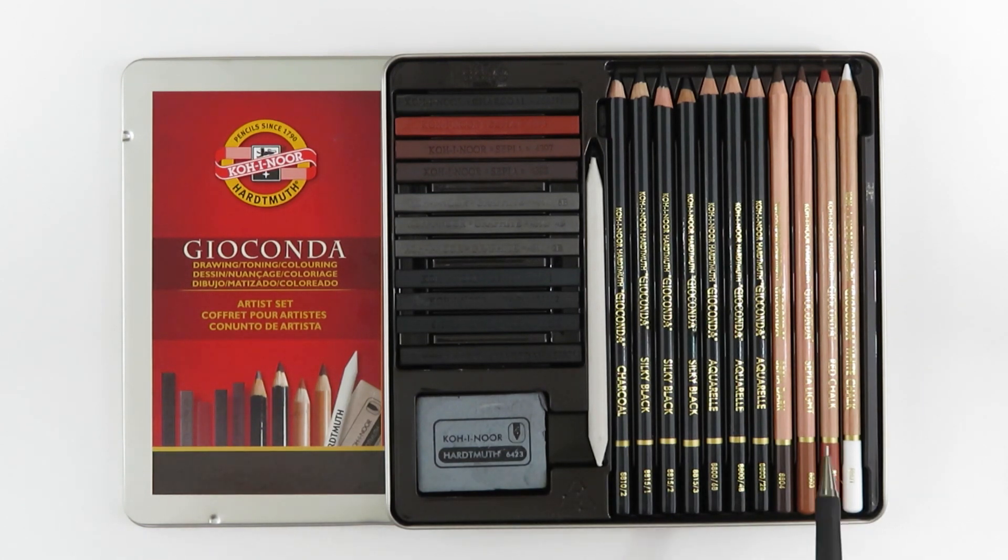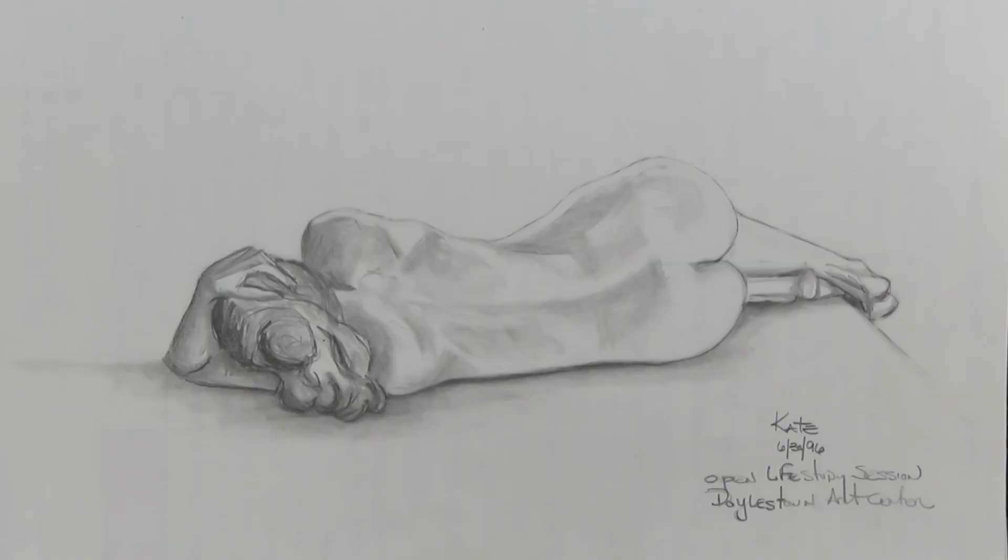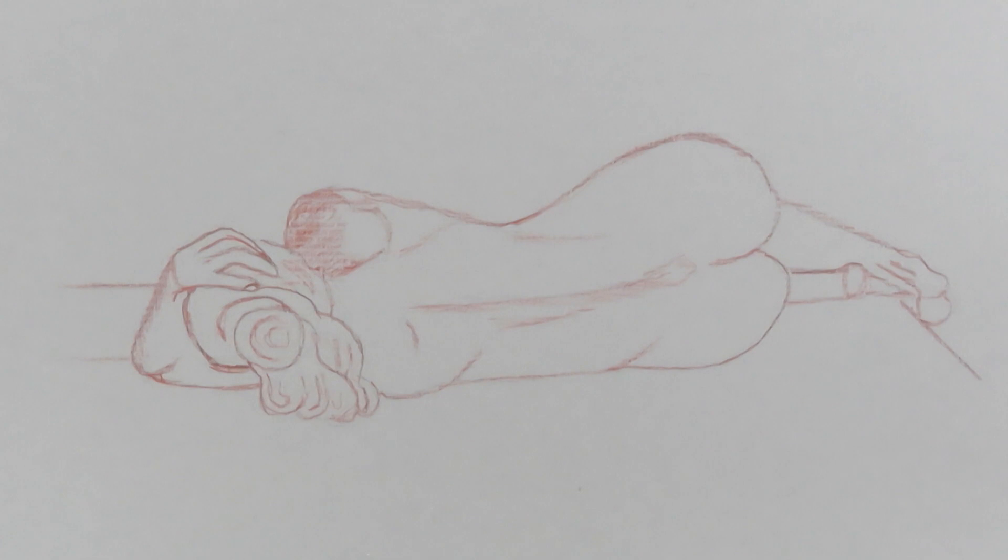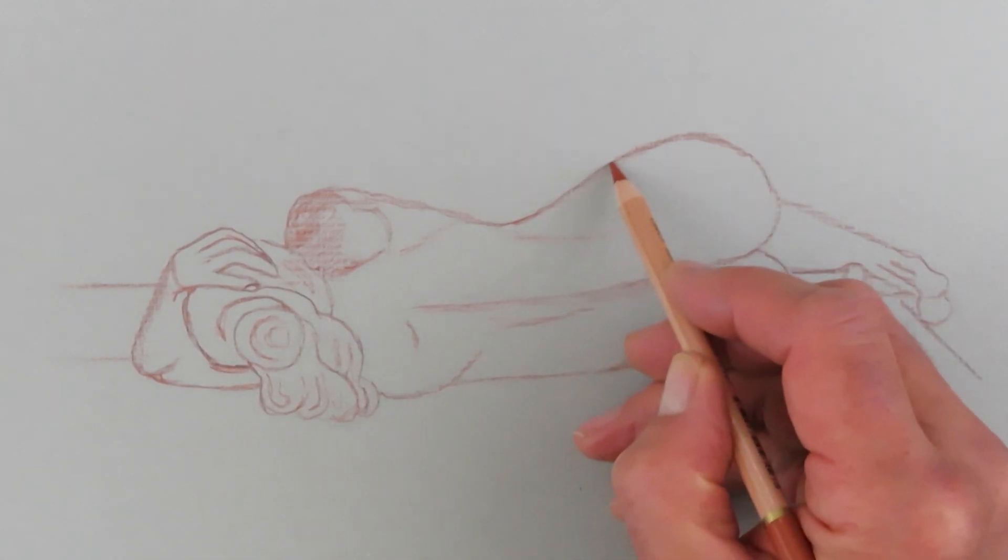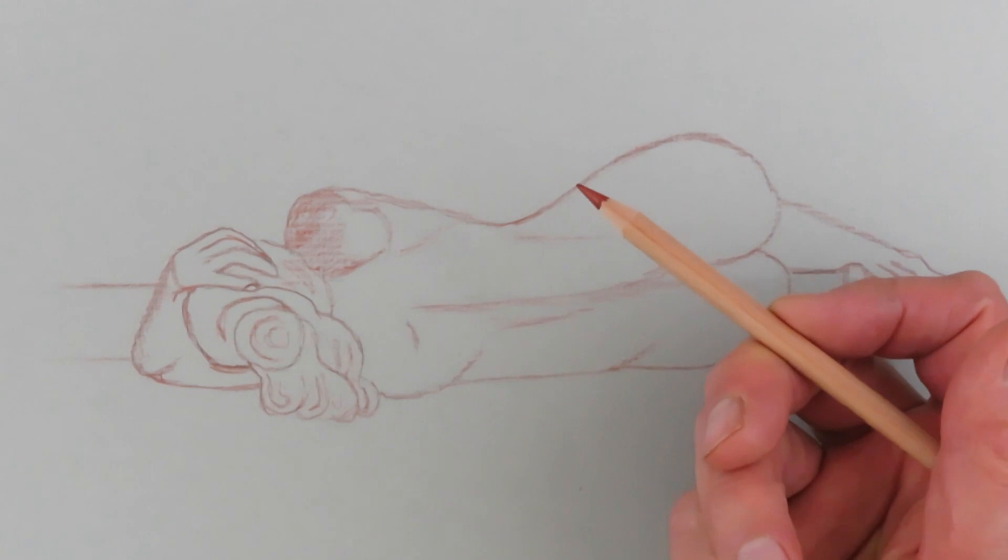My reference for this demonstration is a life study drawing from one of my sketchbooks. Also for this demonstration, I've chosen a mid-value gray paper. After transferring my image to this paper, I will begin to outline the image with red chalk.